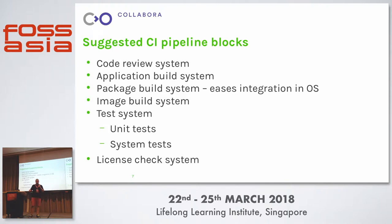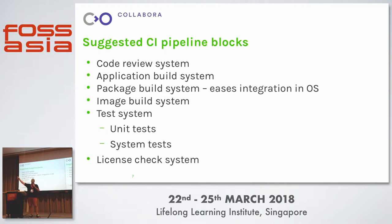I also added an item about license checks, because many people working on free open source are building on top of proprietary or closed-source components without noticing. They depend on a library which depends on something else that is proprietary, so at the end your code depends on something closed source. If you check for that, it's very helpful. For example, GitHub recently opened Licensee, which checks Go packages and Ruby and others — it checks the chain of dependencies so you know if all your licenses are clear and you can ship or distribute your product.